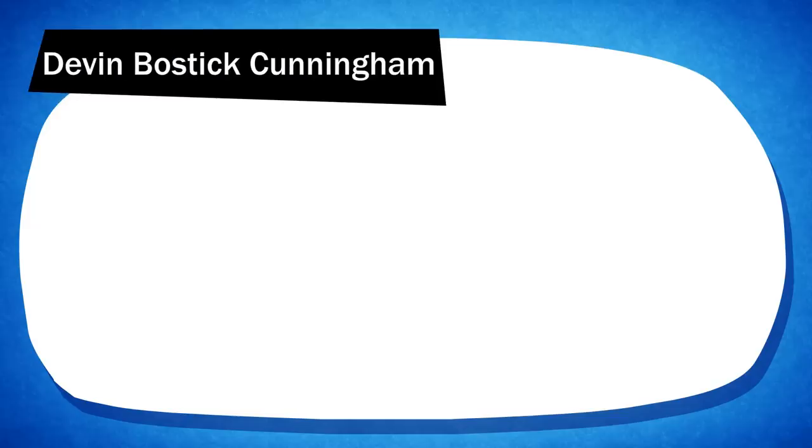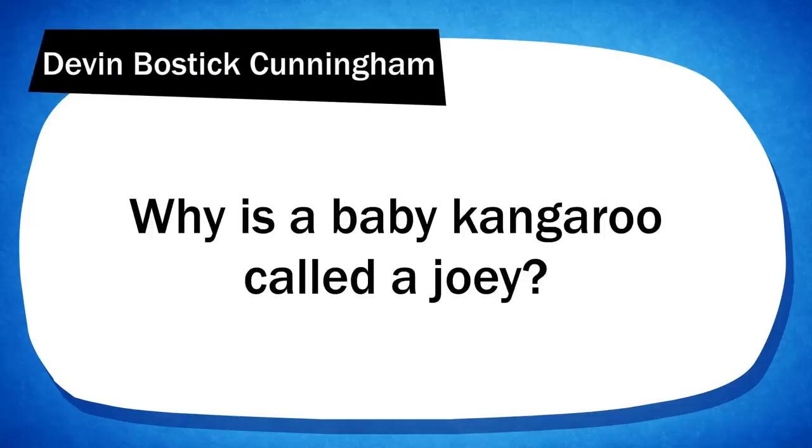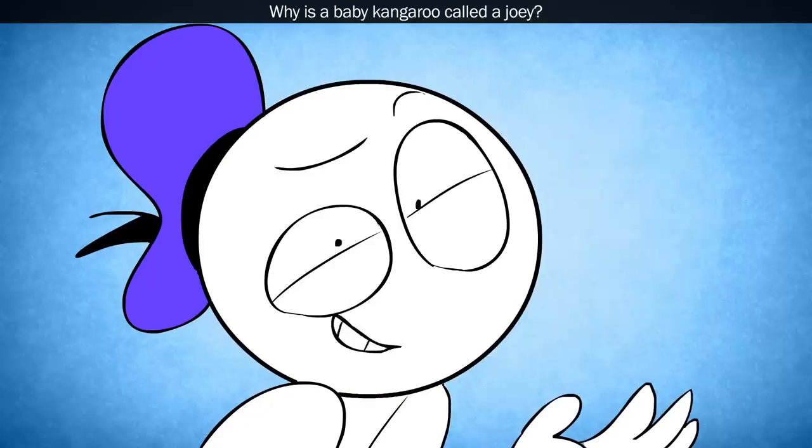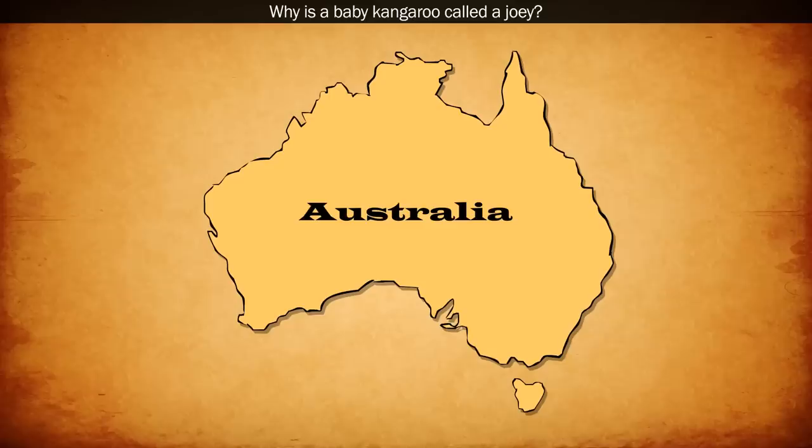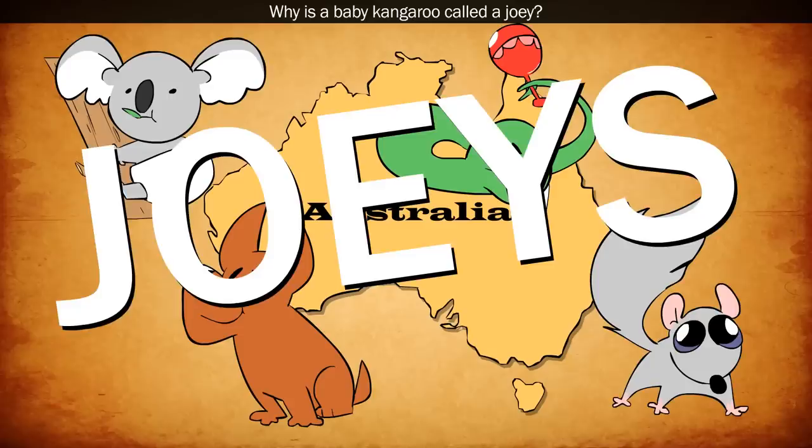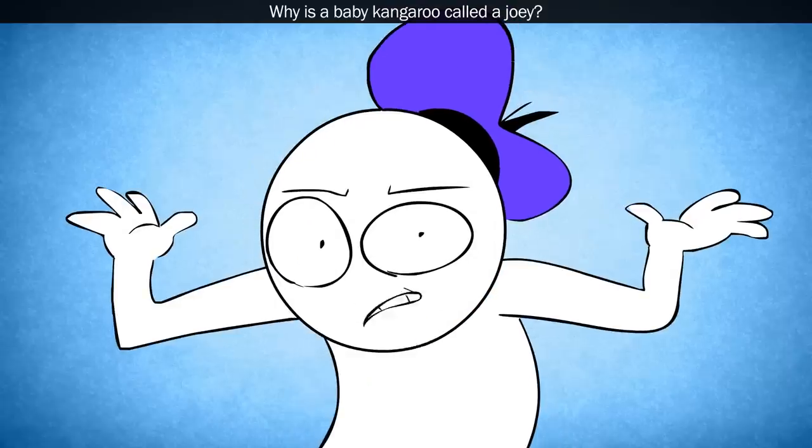Devon Bostick Cunningham asks, why is a baby kangaroo called a joey? Funnily enough, it's not just baby kangas. In Australia, we call baby koalas, possums, dingoes, and snakes, they're all joeys. Oh, pretty much every marsupial is a joey.